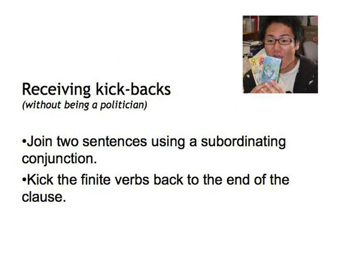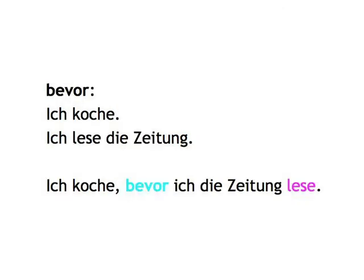Receiving kickbacks without being a politician. This game is best done with somebody else, so arrange a time with your learning buddy. You have to connect two sentences using a subordinating conjunction. Remember that a subordinating conjunction like 'weil' — because — really is vile, and kicks the poor little finite verb to the end. We'll give you some model sentences. 'Bevor': Ich koche. Ich lese die Zeitung. → Ich koche, bevor ich die Zeitung lese. You can now form lots of similar examples. It might be easiest to go through all of the conjunctions once, making up one example each, and then start from the top again.